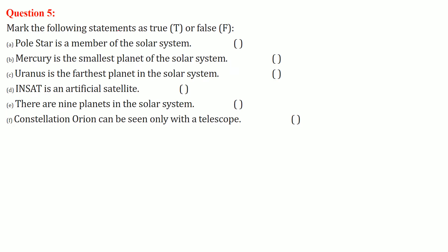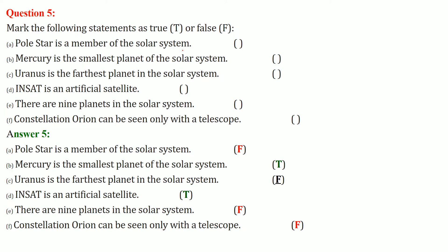True and false. Pole star is a member of the solar system - this is false. Mercury is the smallest planet of the solar system - this is absolutely true.